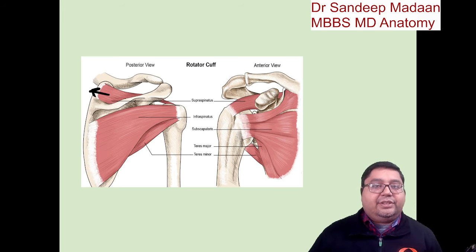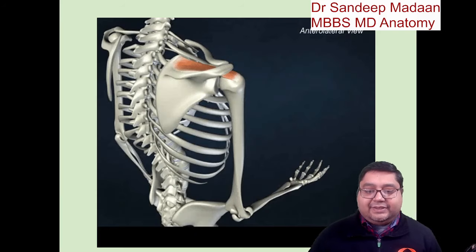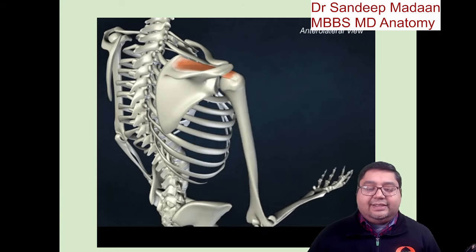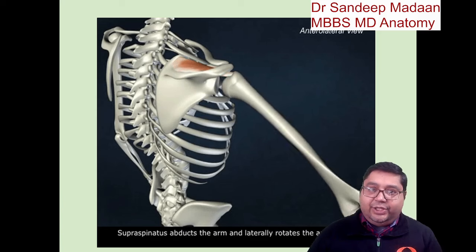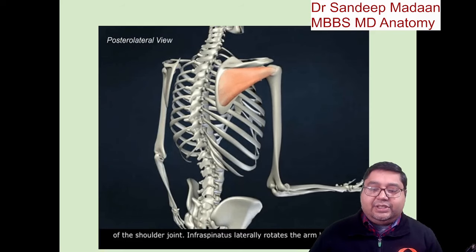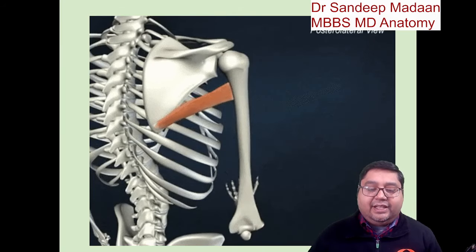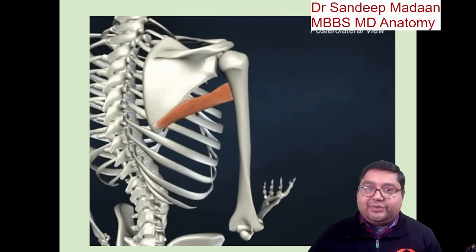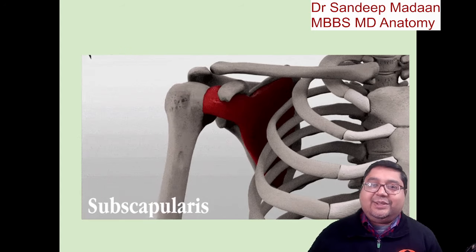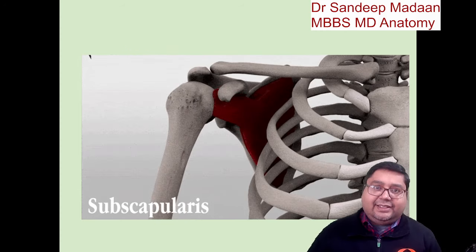Since supraspinatus cannot do any rotation, it will do abduction from 0 to 15 degrees. Looking at these actions: supraspinatus is pulling from above, so the action is only abduction — which is correct per our discussion. This is the infraspinatus muscle; it does lateral rotation because the pull is from behind. Similarly, this is teres minor — again, lateral rotation because the pull is from behind. But when you see subscapularis, the pull is from the front, so which rotation? Medial rotation. For these types of muscle actions, we can simply look at the direction and determine the final pull.